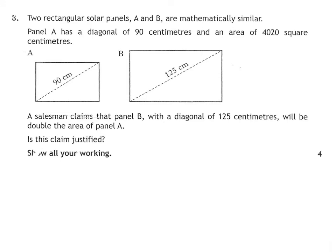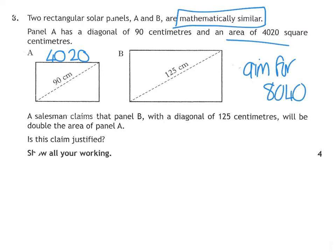Question eight, similarity question. The minute you see mathematically similar, that's what it is. We're talking about area, so it's similar area. We are told that panel A has a diagonal of 90 and the area is 4020. The other one has a diagonal 125. The salesman thinks that panel B is just double panel A. So if it is doubled, we are aiming for an area of 8040. If it's not 8040, he's wrong.